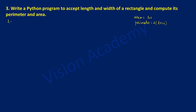So let us take a variable called l of type integer, and here we will ask the user to input the length of the rectangle. In double quotation marks I will write: enter the length of the rectangle.